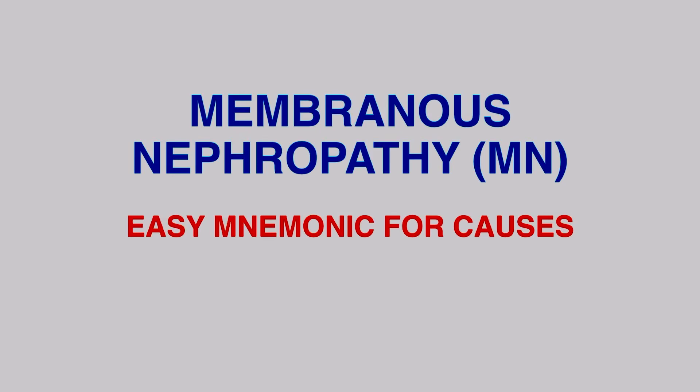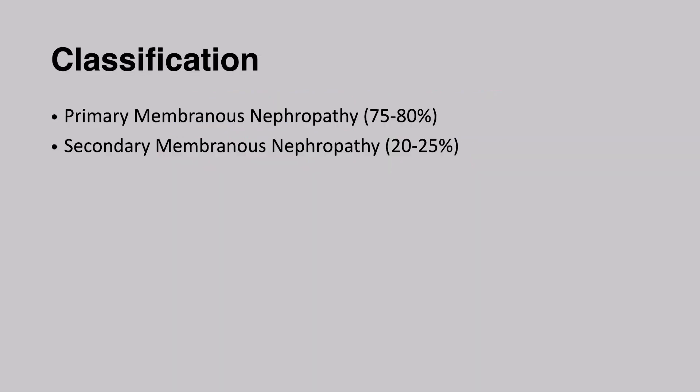Today, we will discuss an easy mnemonic to remember the causes of membranous nephropathy. Membranous nephropathy can be broadly classified into primary and secondary types. The primary type is the most common, occurring in 75% to 80% of patients, while secondary membranous nephropathy occurs in 20% to 25% of patients.